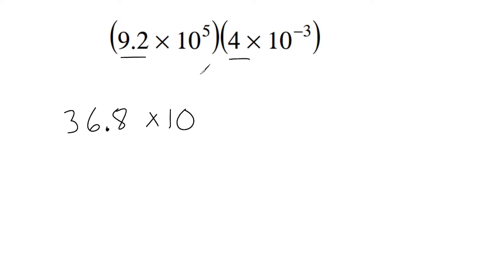Notice that we have a positive exponent and a negative exponent. However, we still add them together. So if we combine positive 5 and negative 3, that would give us a total of positive 2.